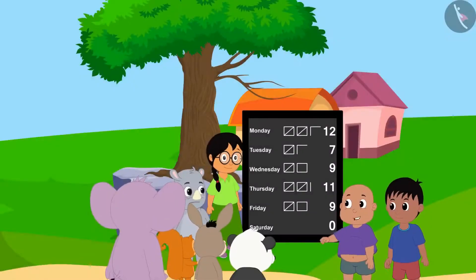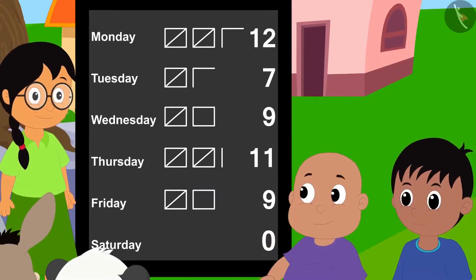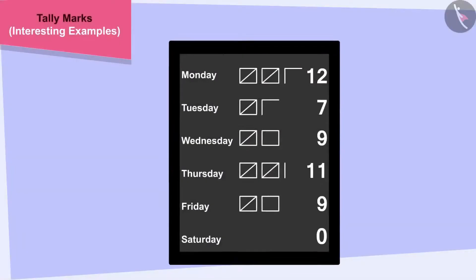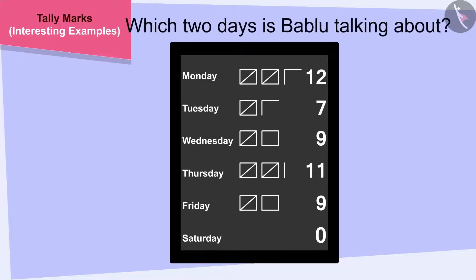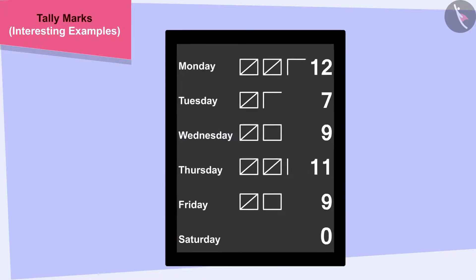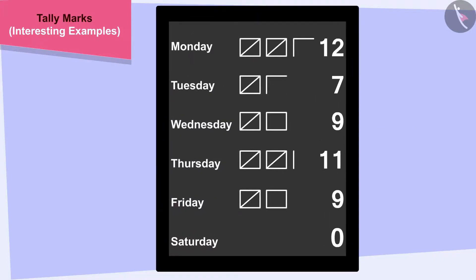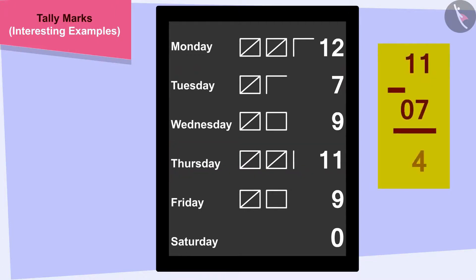Yes, Raju, and look — on this day, 4 more hours of work were completed than this day, Babalu told Raju. Children, can you tell which two days Babalu is talking about? To find a solution, we have to find two days in which the difference between the hours of work completed is 4. If we look closely, we will find that 7 hours of work were completed on Tuesday and 11 hours on Thursday, which is 4 more than 7. So, Babalu is talking about Tuesday and Thursday.